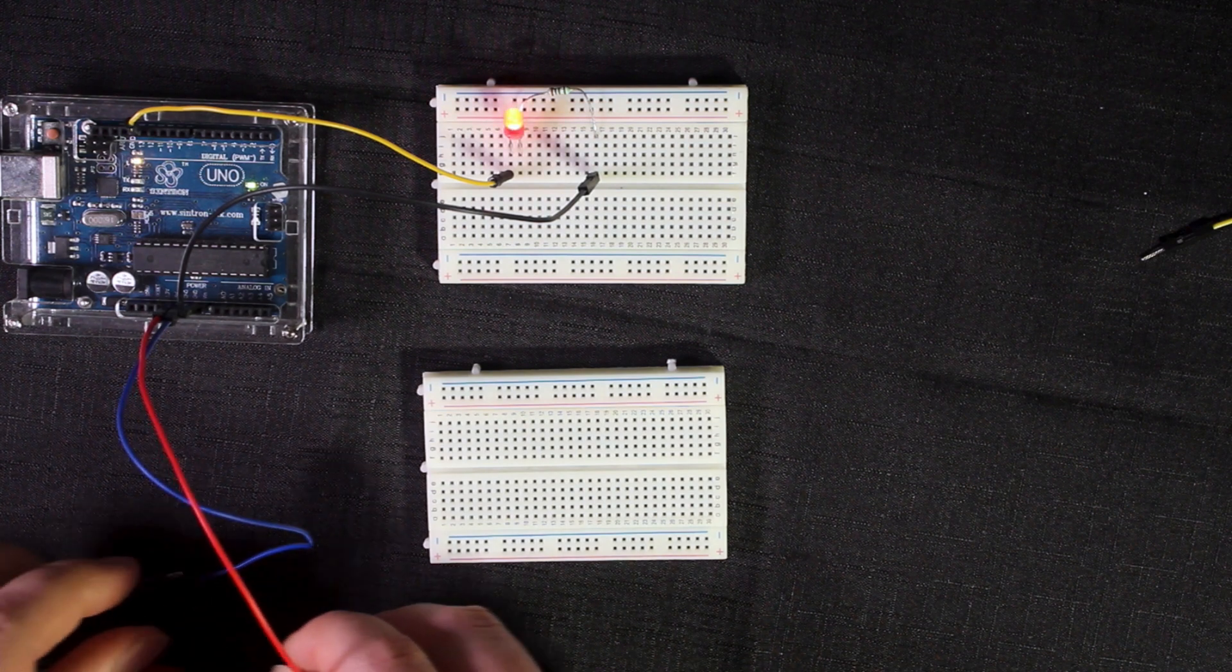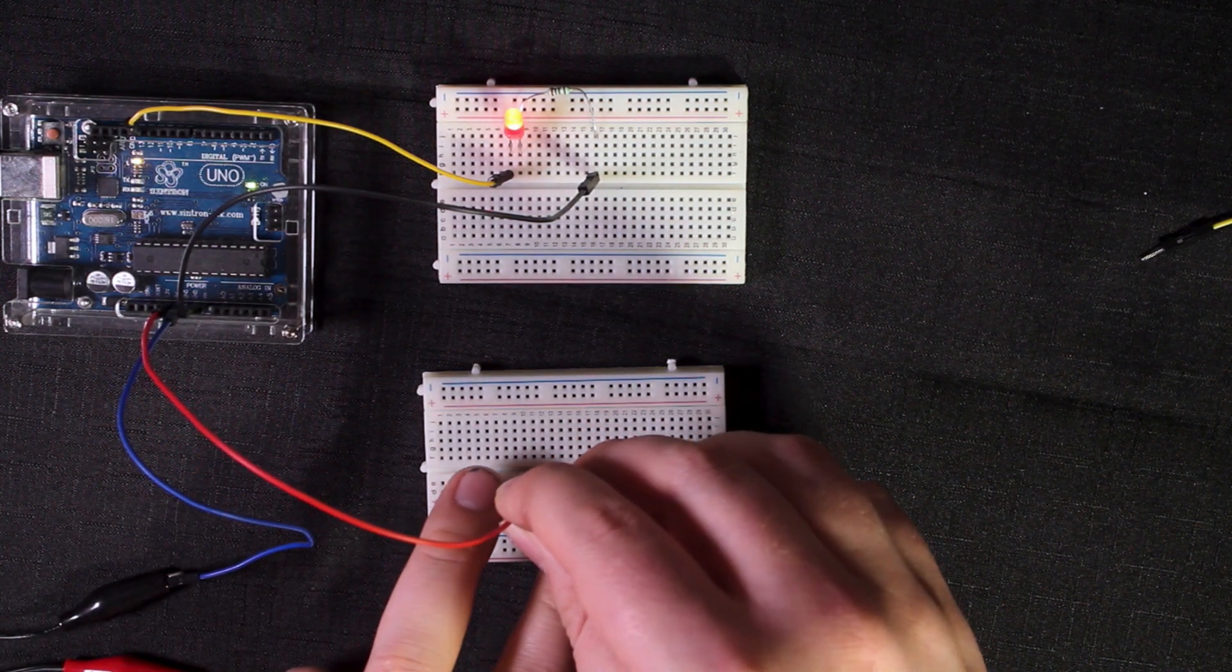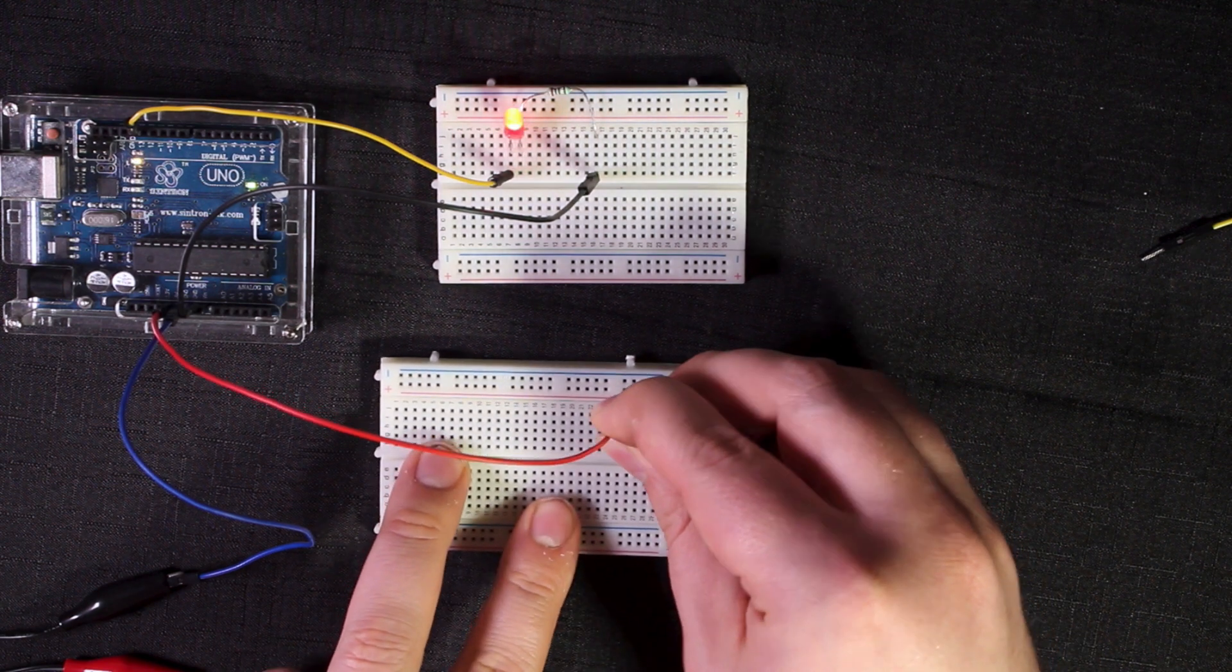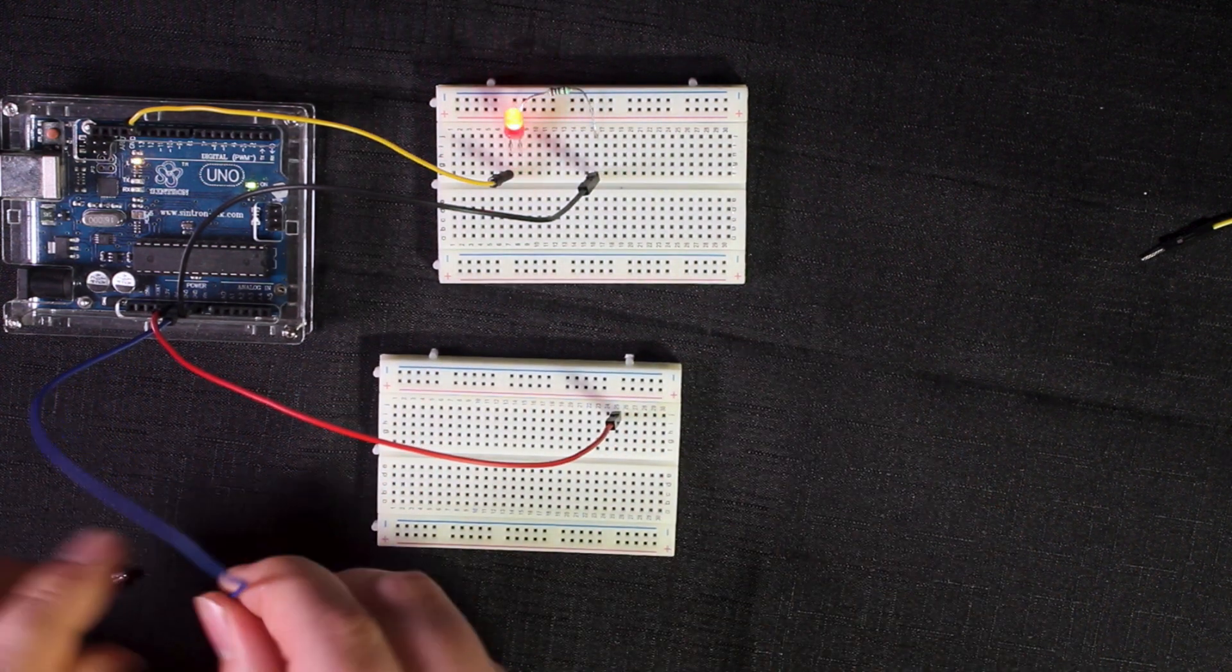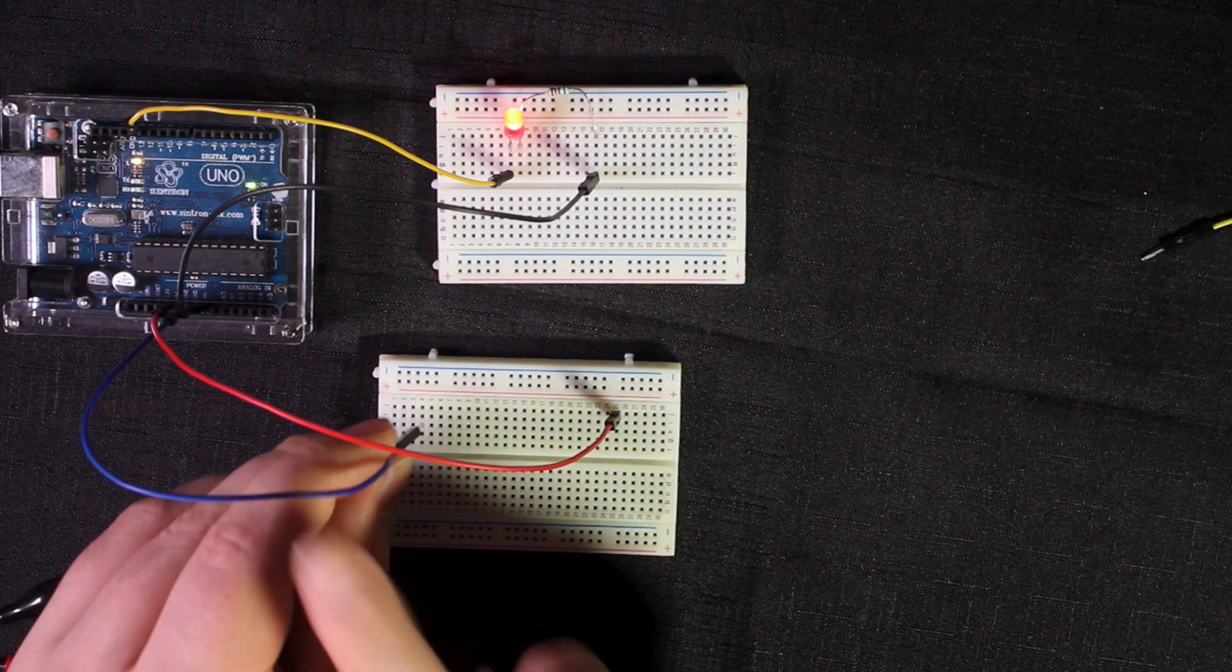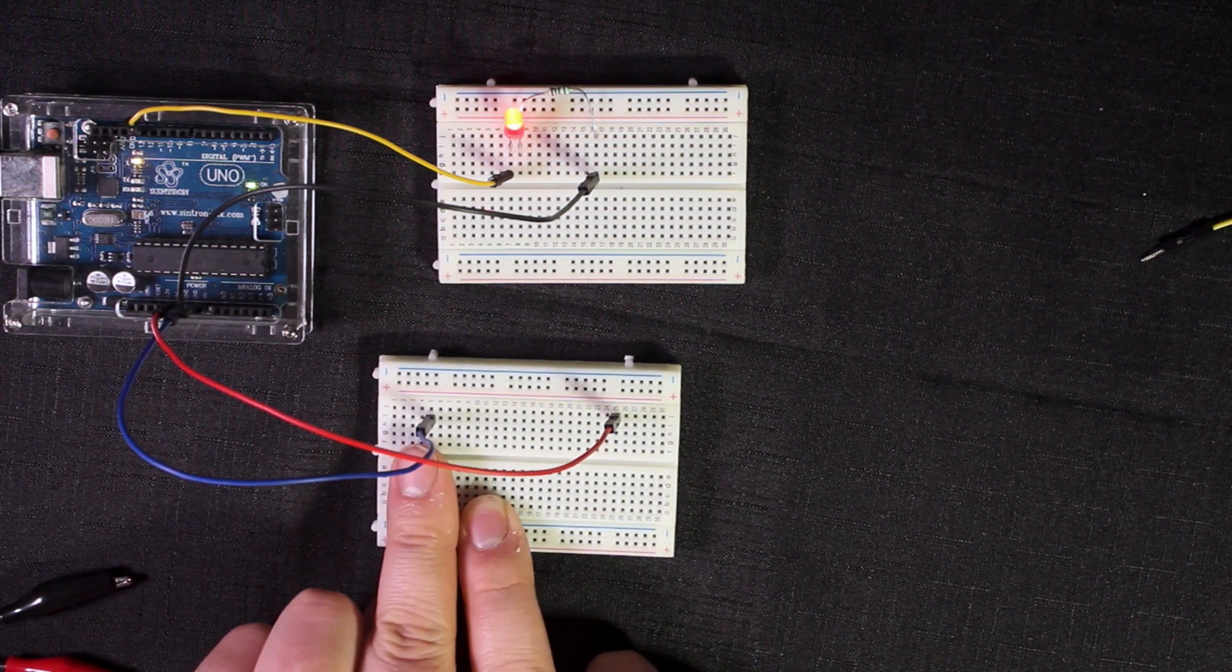To start off we need to take one of these and put it on the breadboard. This is the plus five volts and ground.